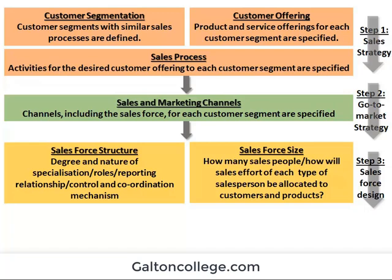The size of the sales force — how many salespeople, and how will the sales effort of each type of salesperson be allocated to customers and products? It's always an issue. How many sales personnel are required? The sales team will say they're always short-staffed, but realistically how many are required? We're talking about productivity here — if there were more of them, would it be worthwhile? Or perhaps they're already overmanned.